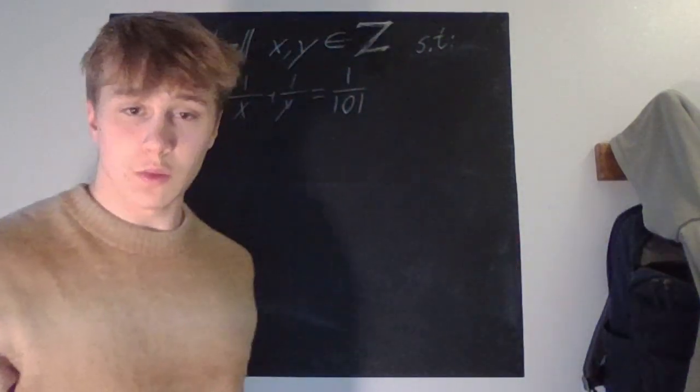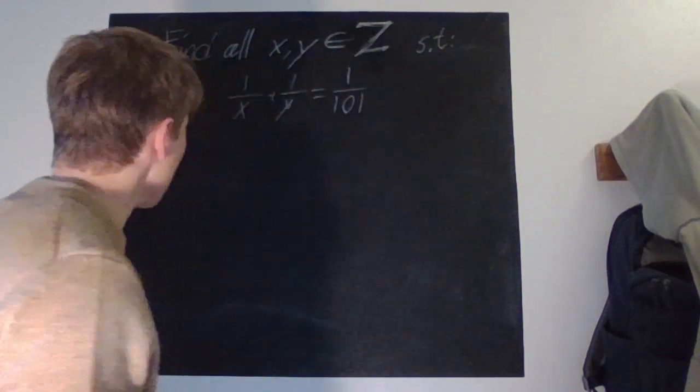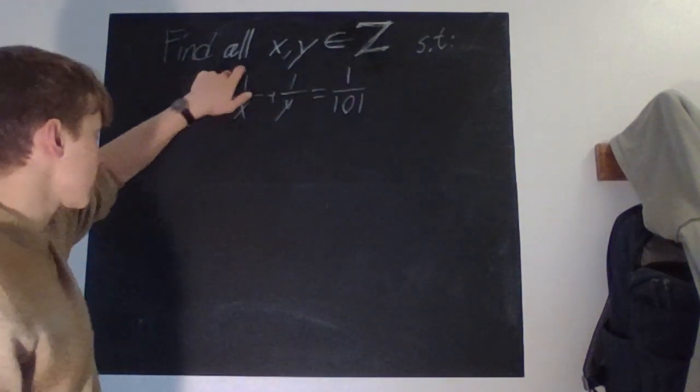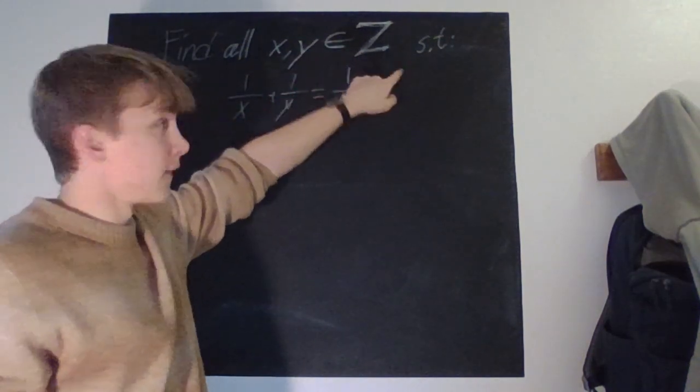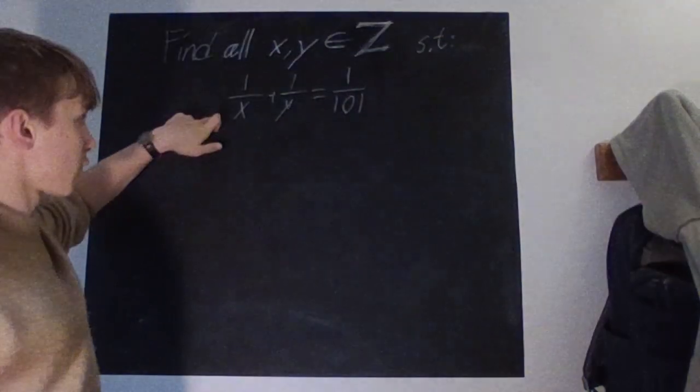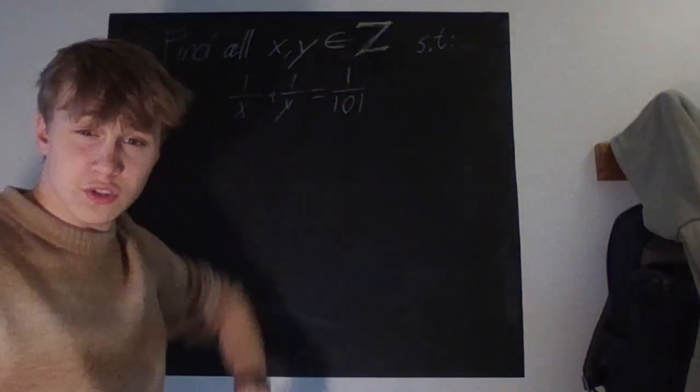Sup guys, so today we have another math competition problem. Find all pairs of x and y belonging to the integers such that 1/x + 1/y is equal to 1/101.